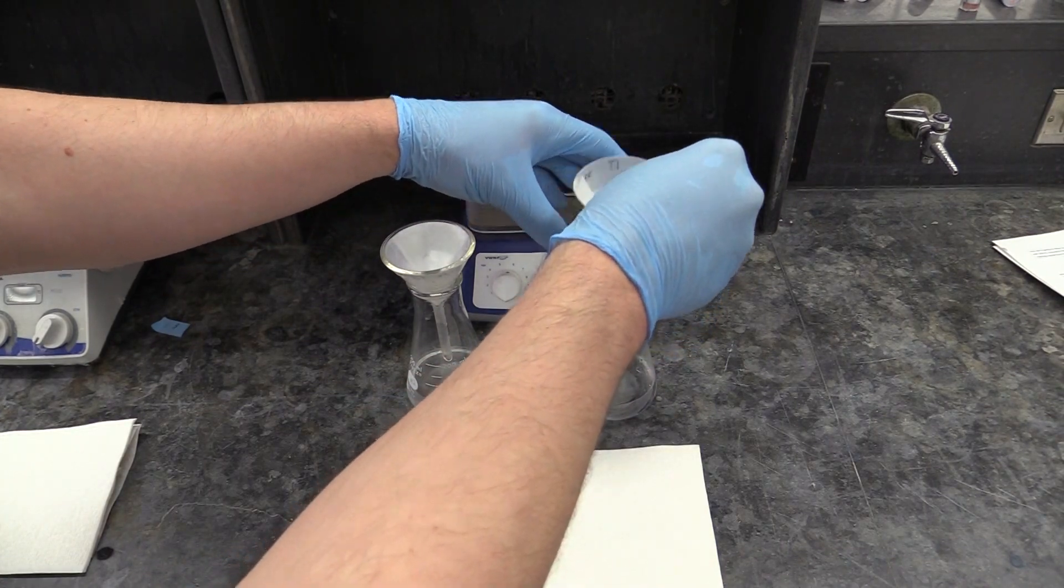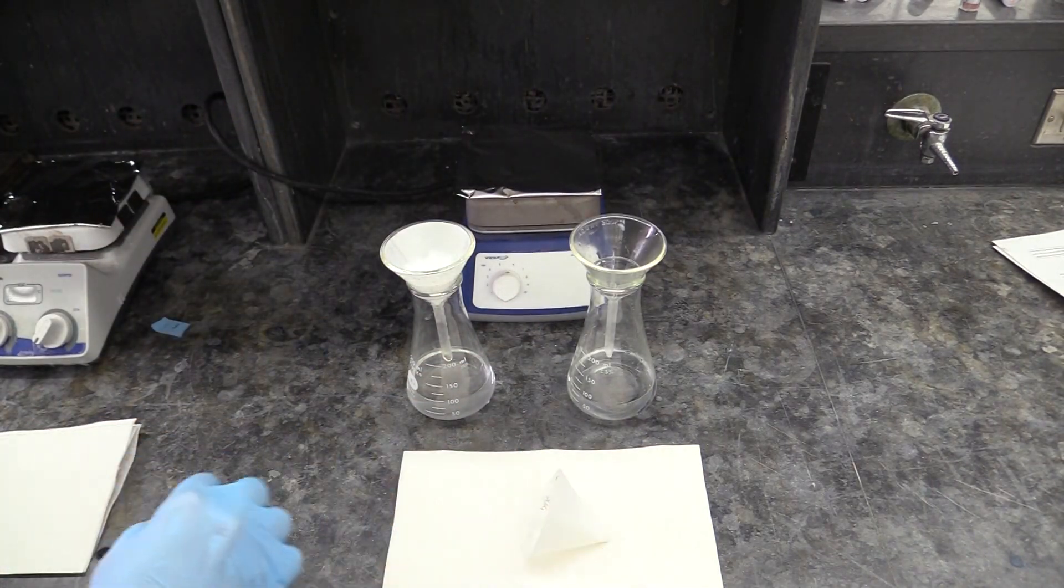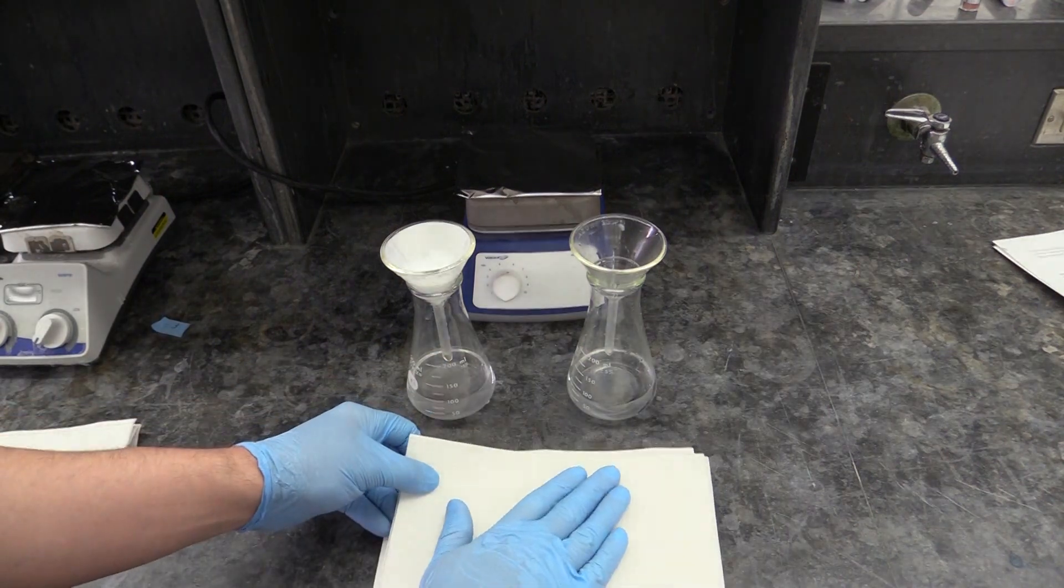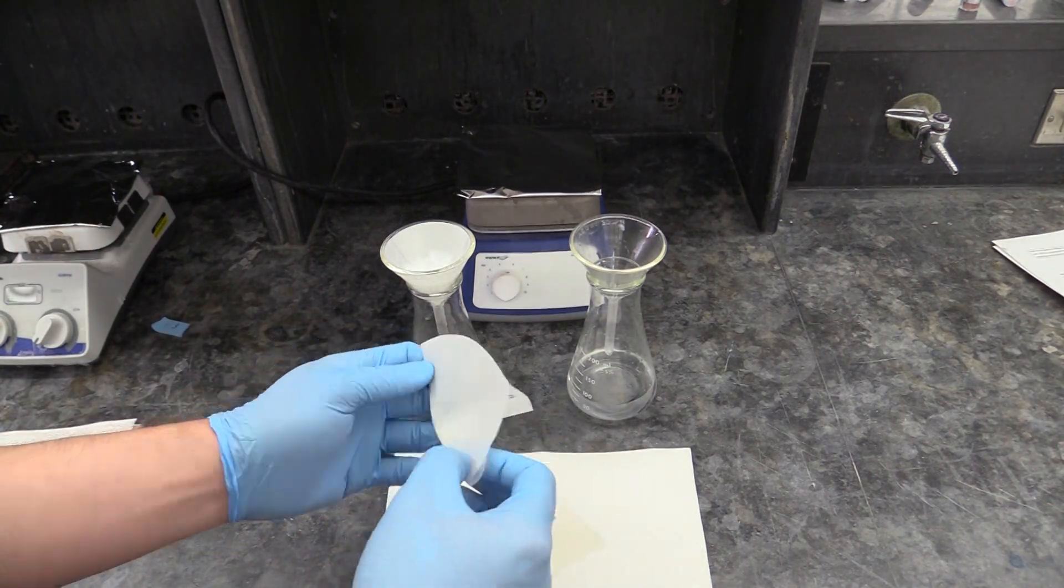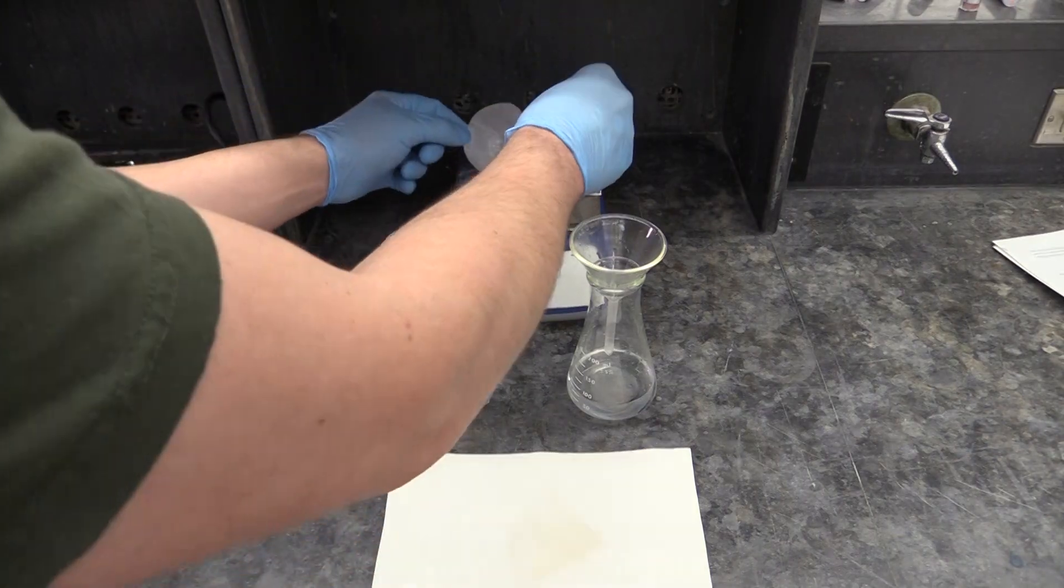Carefully take one of your filter papers out, gently pat it dry with some paper towels, then open it up and put it on your hot plate's hat and turn it on about medium heat.